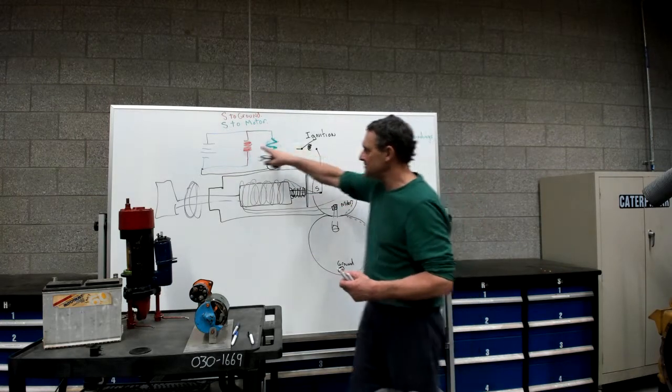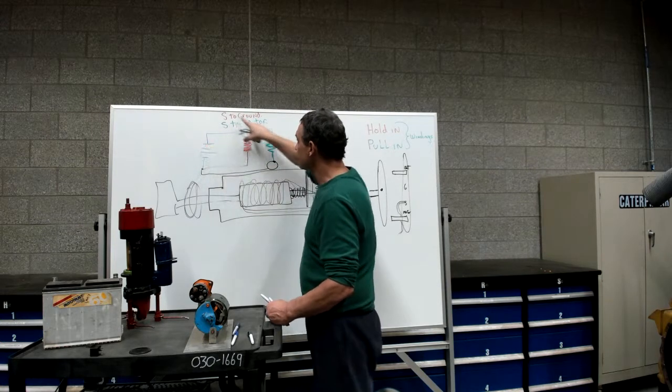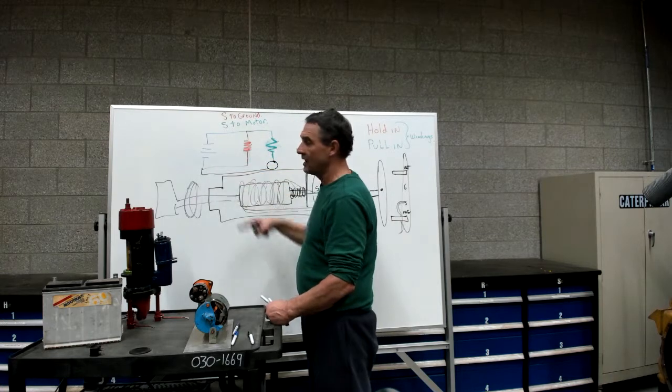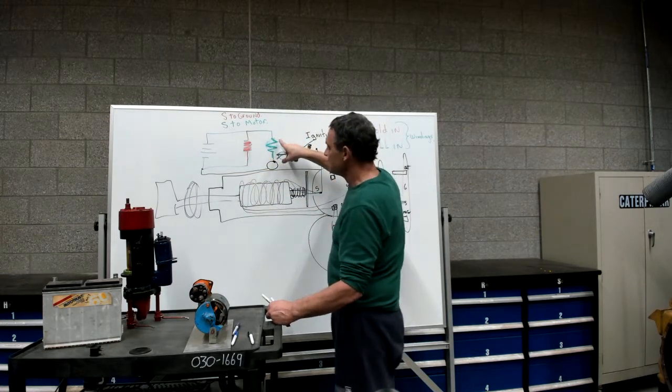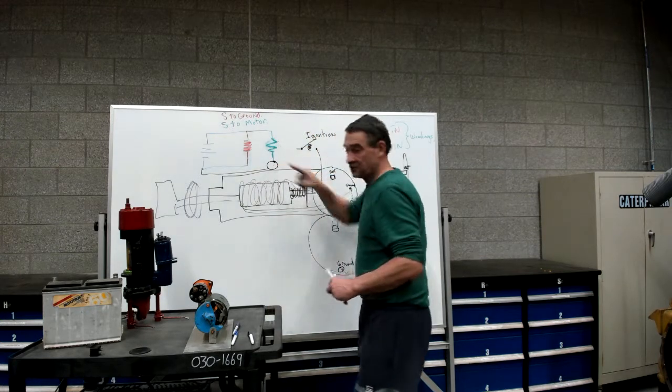I made a bit of a schematic here. If you look at this, we have one circuit going from the battery to the hold-in windings and then back to ground. On the S terminal, the power goes to the S terminal and back to the motor terminal.